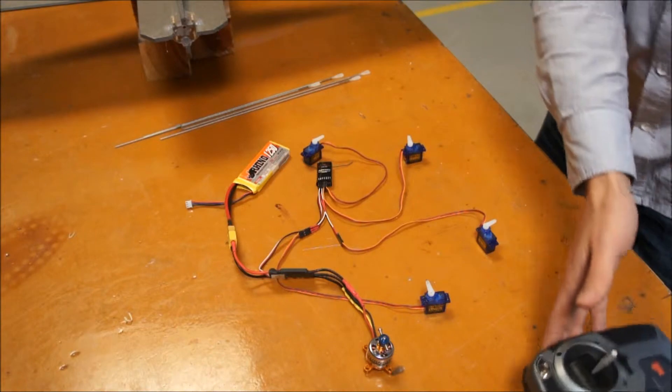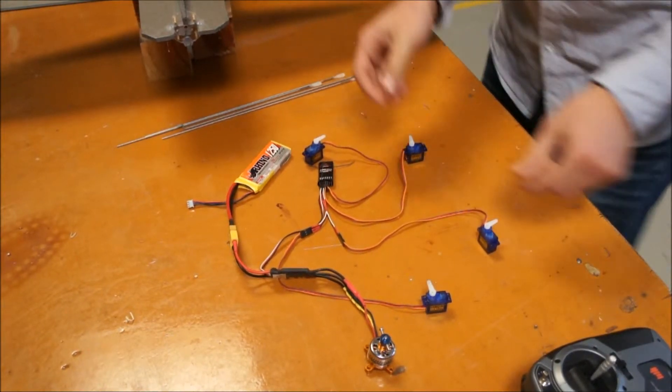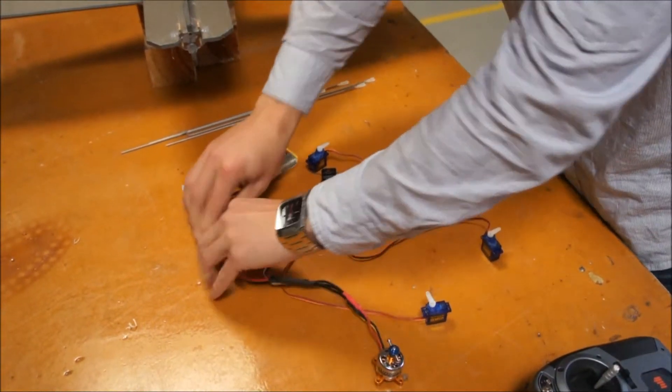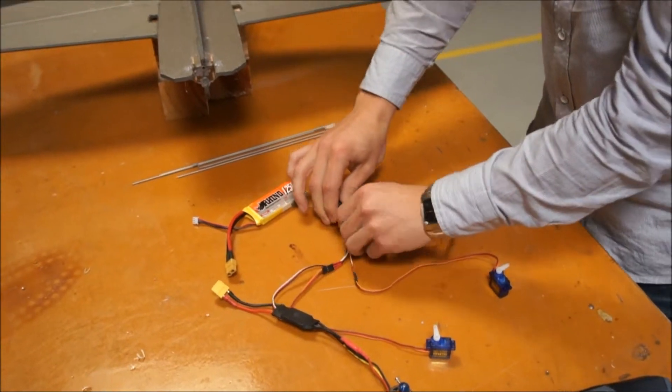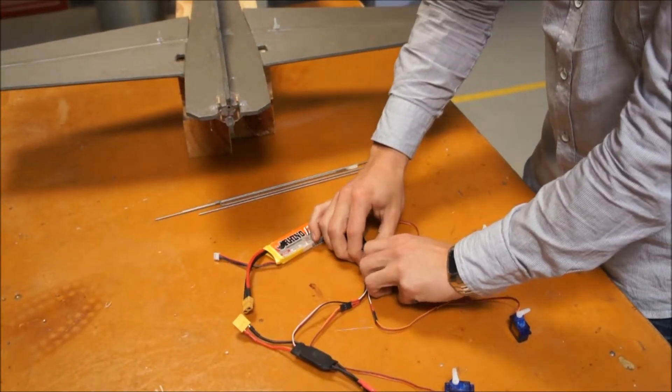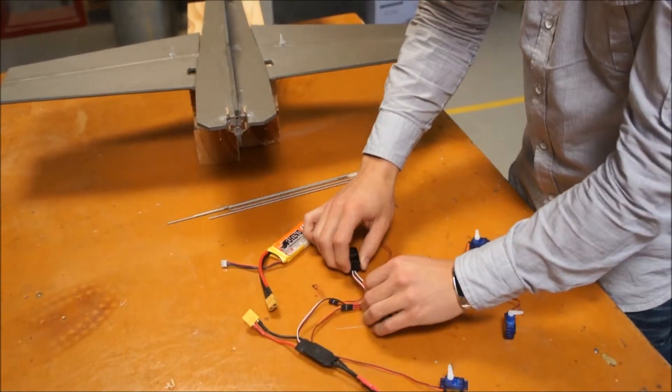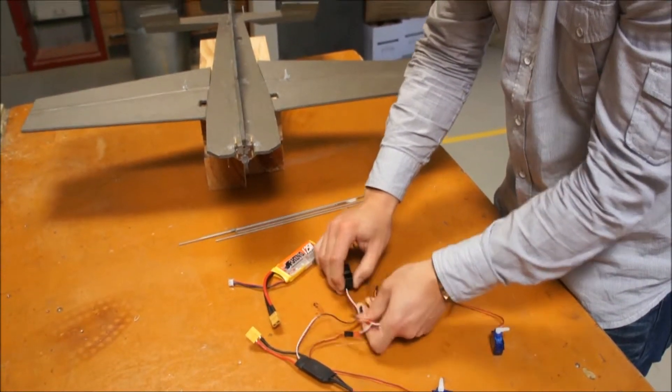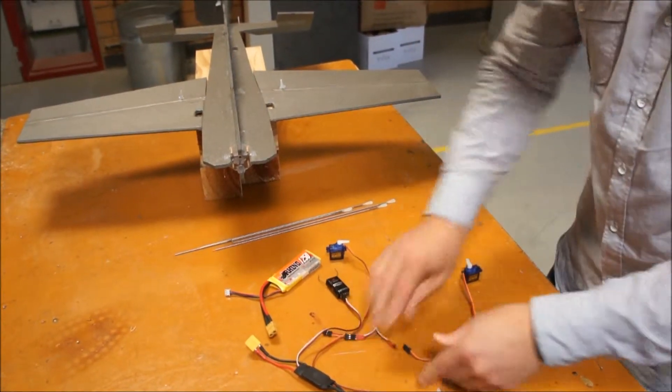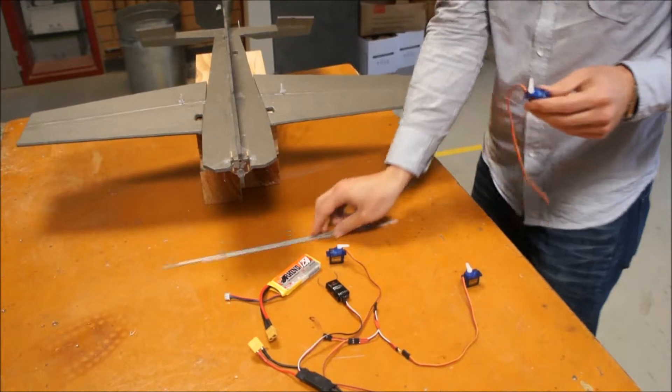So we're going to have a look at today putting our servos in. So I'll just disconnect our control system now that we know it's working. We're going to have a look at putting our servos in and connecting out the control rods. So the first one we'll have a bit of a look at is one of the ailerons.